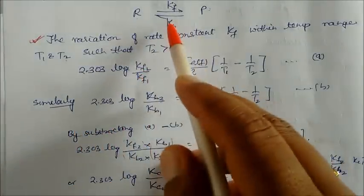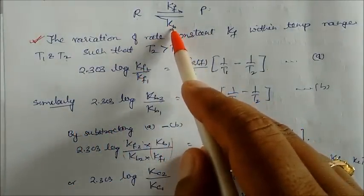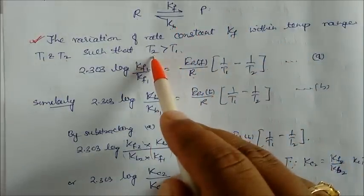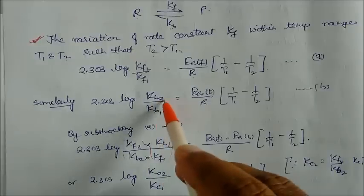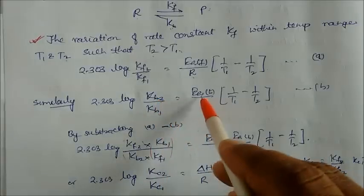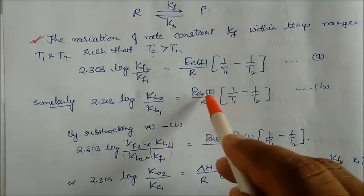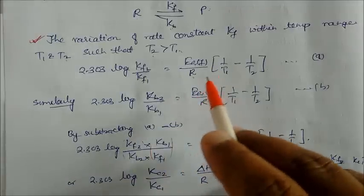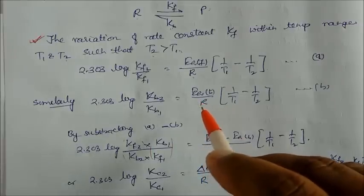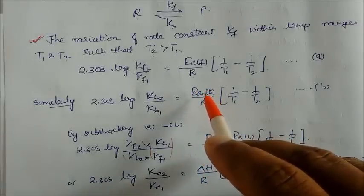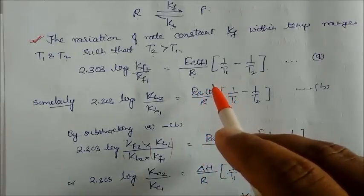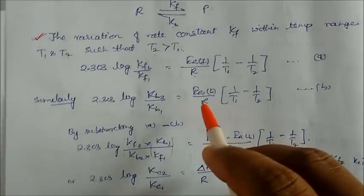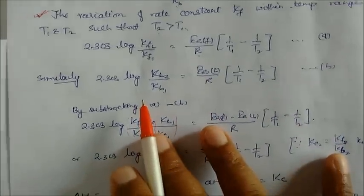Similarly for the backward reaction, with T2 > T1: 2.303 log(Kb2/Kb1) = Ea(backward) / R × (1/T1 − 1/T2). Activation energy is the energy required to initiate the reaction; without it, the reaction remains dormant. This applies to both the forward and backward reactions.